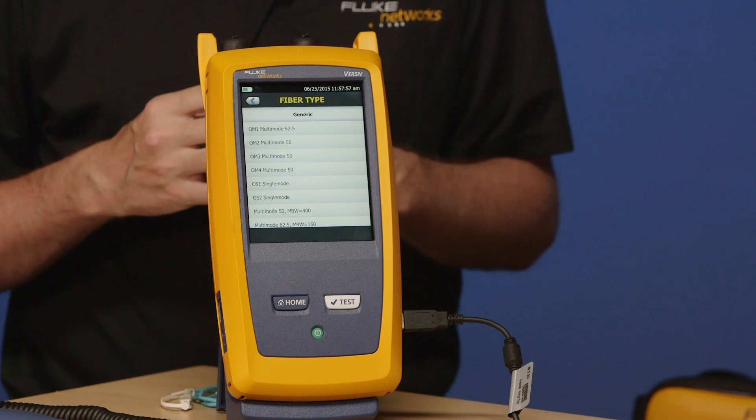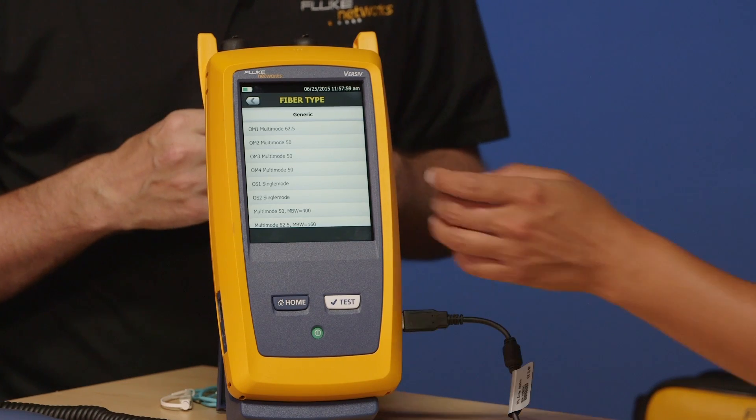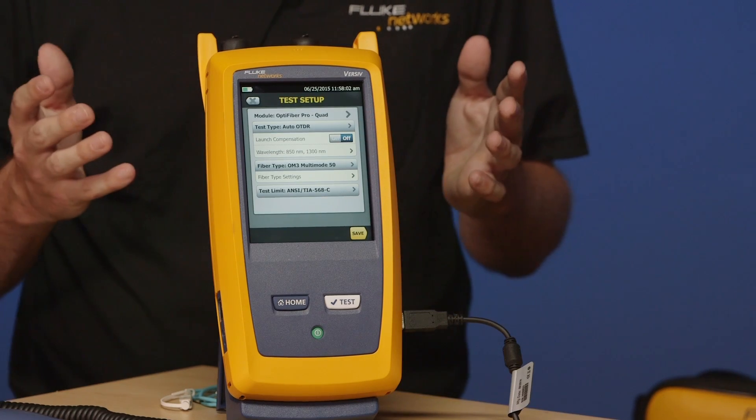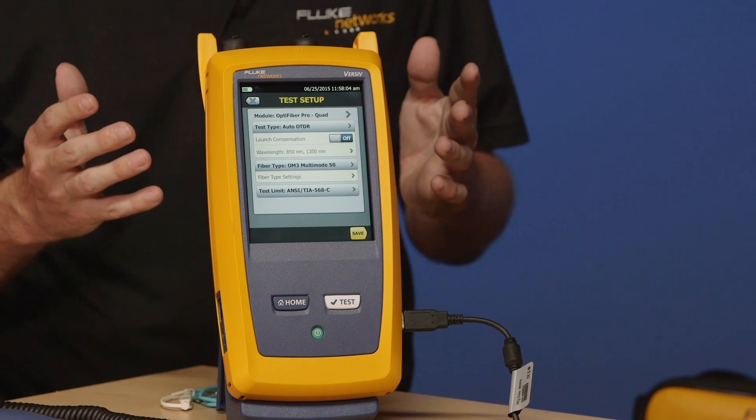Now, be careful here because what you really want to do is go to the manufacturer's website and look at the data sheet for their fiber and make sure that's the information that matches up with what's in the tester here. You could create a custom cable type or you could just pick generic. And today, we're going to pick generic. So, tap generic. And just like our CertiFiber Pro before, we're going to pick OM3 fiber. So, go ahead and tap OM3 fiber. And we are now set up for our fiber type.